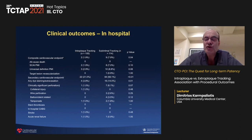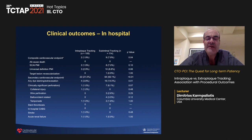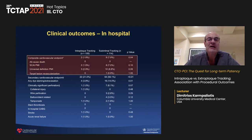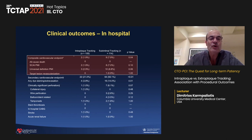Looking at clinical in-hospital outcomes before discharge, the MACE rate was higher when IVUS identified an extravascular wire track pre-stenting, driven mainly by periprocedural MI using the universal definition of MI. There was no significant difference in clinically significant perforations or tamponade. In-hospital all-cause death was zero in either group. There were more myocardial infarctions using the universal definition in the subintimal group, with no significant difference in target vessel failure.